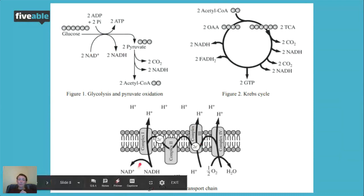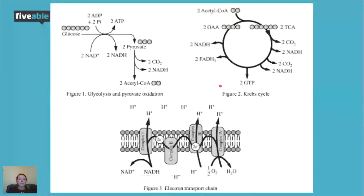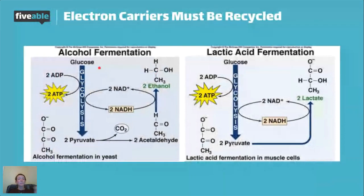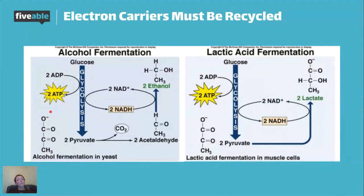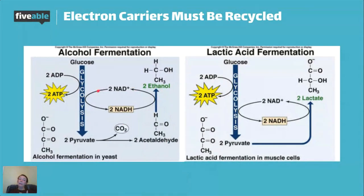If oxygen is not present, or for organisms not going through the electron transport chain, electron carriers must be recycled elsewhere to continue glycolysis. The two major pathways are alcohol fermentation and lactic acid fermentation. In alcohol fermentation — how we get beer and wine — the electron carrier is recycled by dropping its electron onto acetaldehyde, converting it into ethanol, and the empty carrier goes back to glycolysis to be refilled.